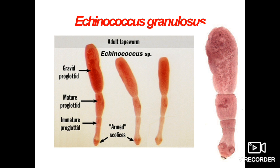Here is the diagram of the adult tapeworm. The size of the adult worm ranges from 3 mm to 6 mm and has three different segments called proglottides — immature, mature, and gravid proglottid. The average number of eggs per gravid proglottid is 823. This parasite has four suckers on its head (scolex) and also has a rostellum with hooks.